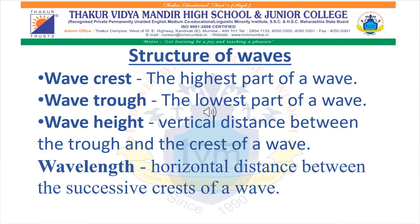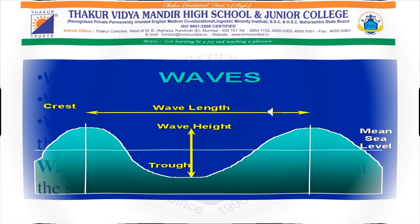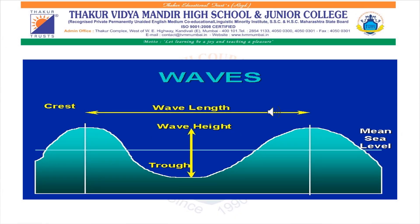What is the structure of the wave? Wave crest is the highest part of a wave. Wave trough is the lowest part of the wave. Wave height is the vertical distance between the trough and the crest of a wave. Wavelength is the horizontal distance between the successive crests of a wave. Look at this picture — you can understand the structure of waves: what are crests, what is trough, what is wave height, and what is wavelength.